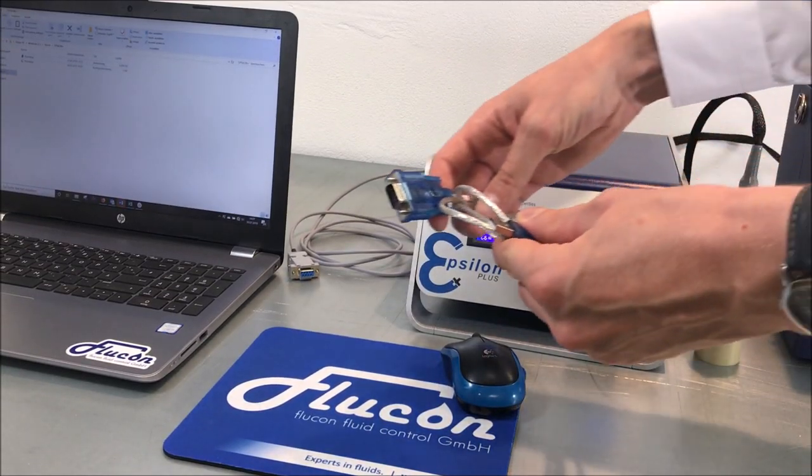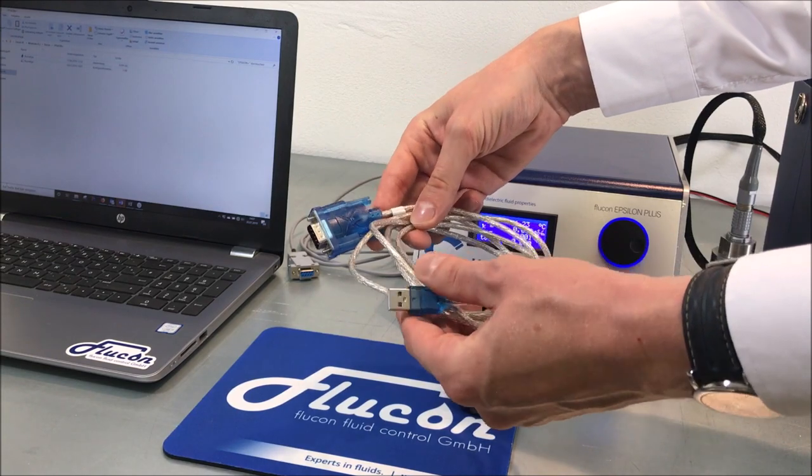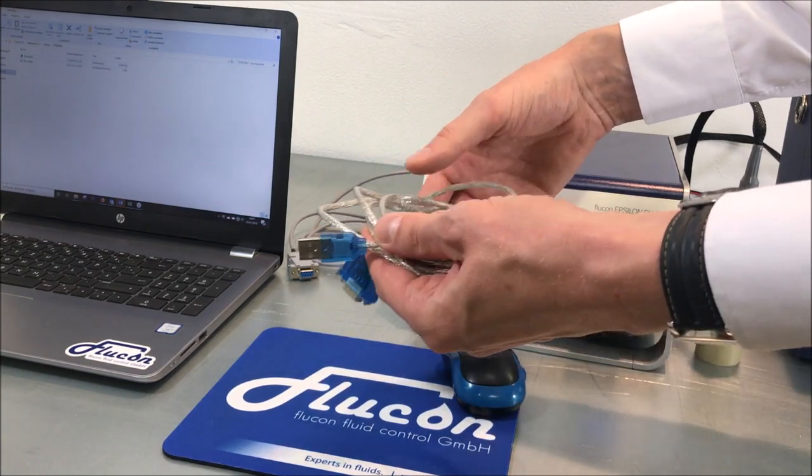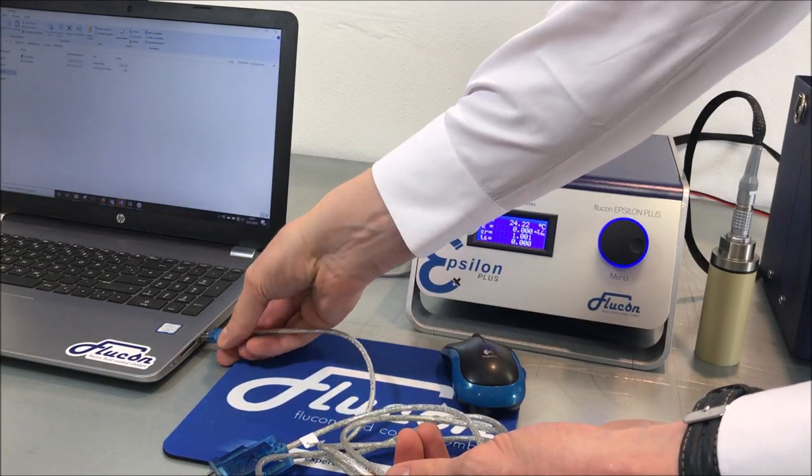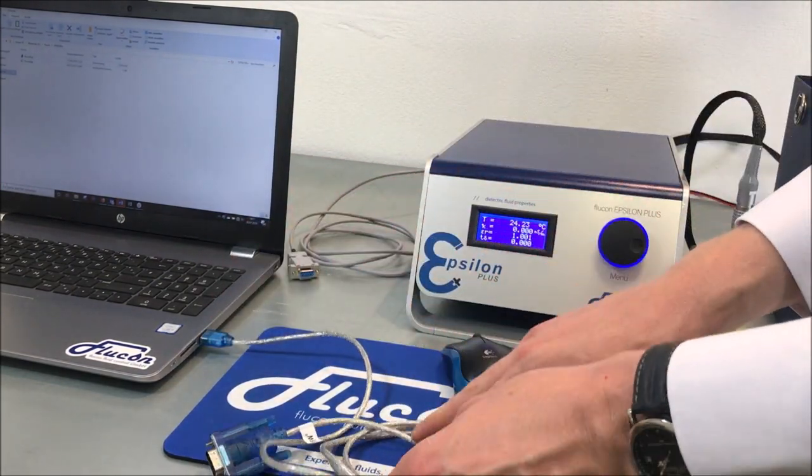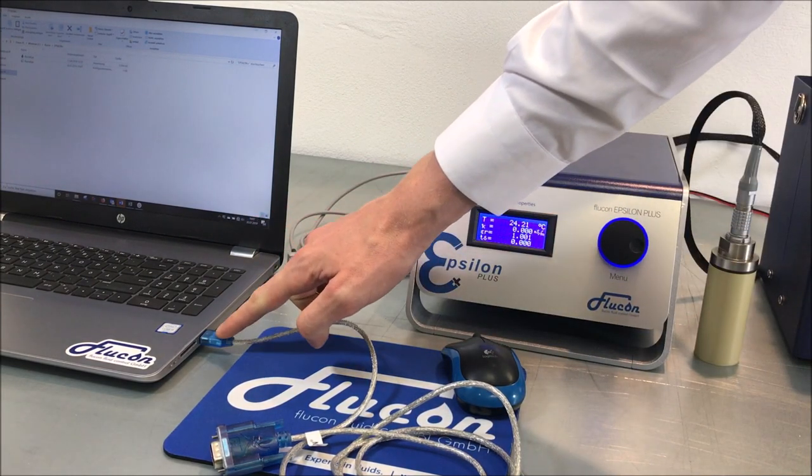If there is no serial port available on your computer or laptop, you may want to use the serial to USB connector for adaptation. Make sure that you plug it into the USB port of your computer first. Its driver must be installed correctly before connecting the Epsilon Plus.